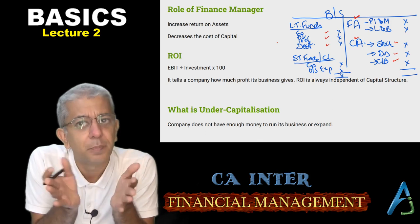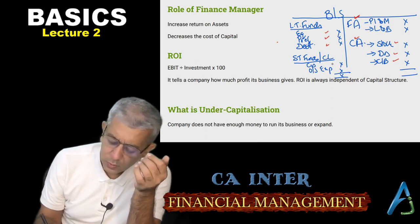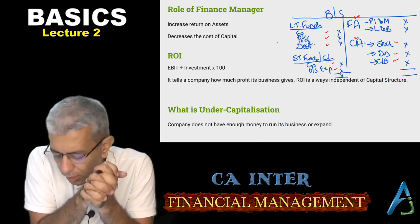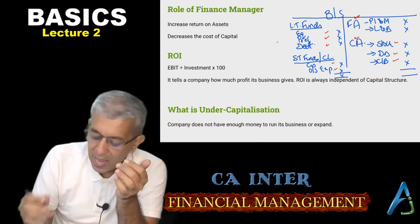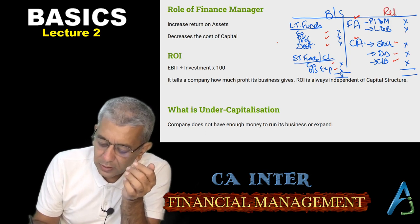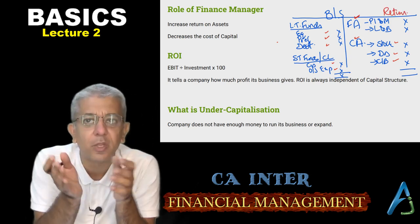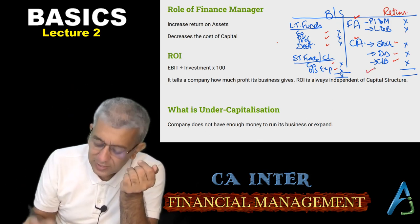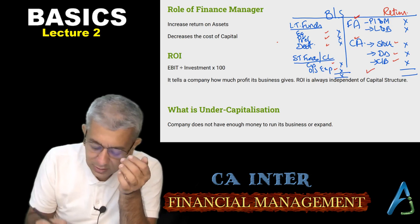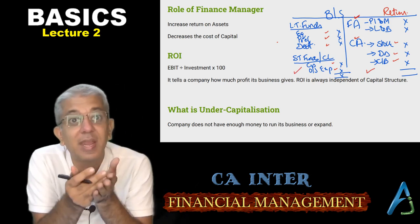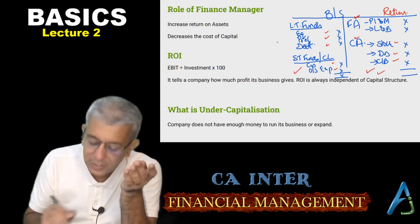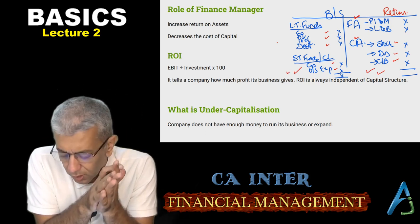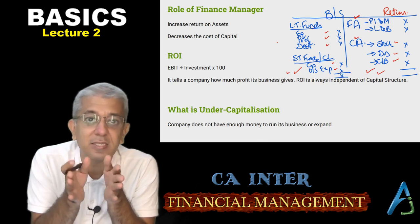Long-term sources: equity — the true owners of the company; preference — somewhere in the middle; and debt — the lenders to the company. In short-term funds, you have creditors and outstanding expenses. We often say that assets give you return. Whatever profit you get is because you used your money to purchase assets. That is why this side is called application of funds, and the other side is called sources of funds.